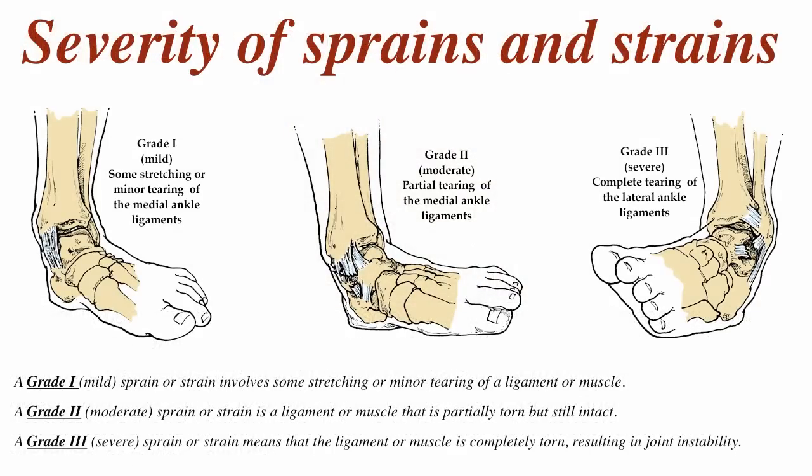Let's talk about the severity of sprains and strains. A grade 1, or mild, sprain or strain involves some stretching or minor tearing of the ligament or muscle. Grade 2 is moderate — partially torn but still intact. A grade 3, which is severe, means that the ligament or muscle is completely torn, resulting in joint instability.